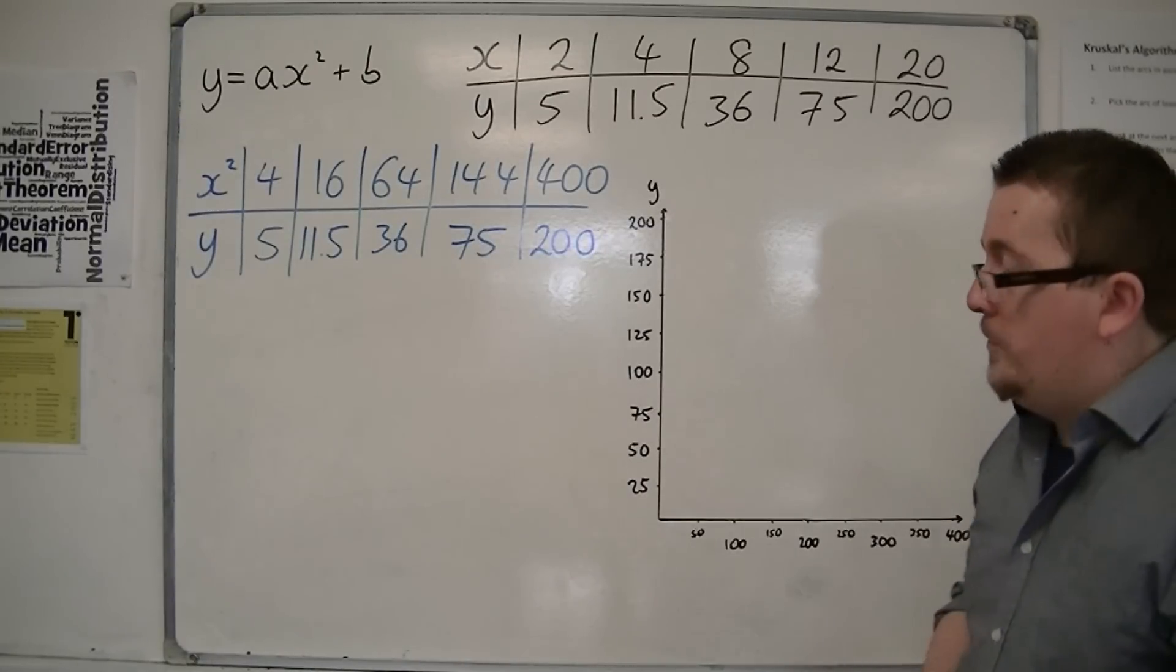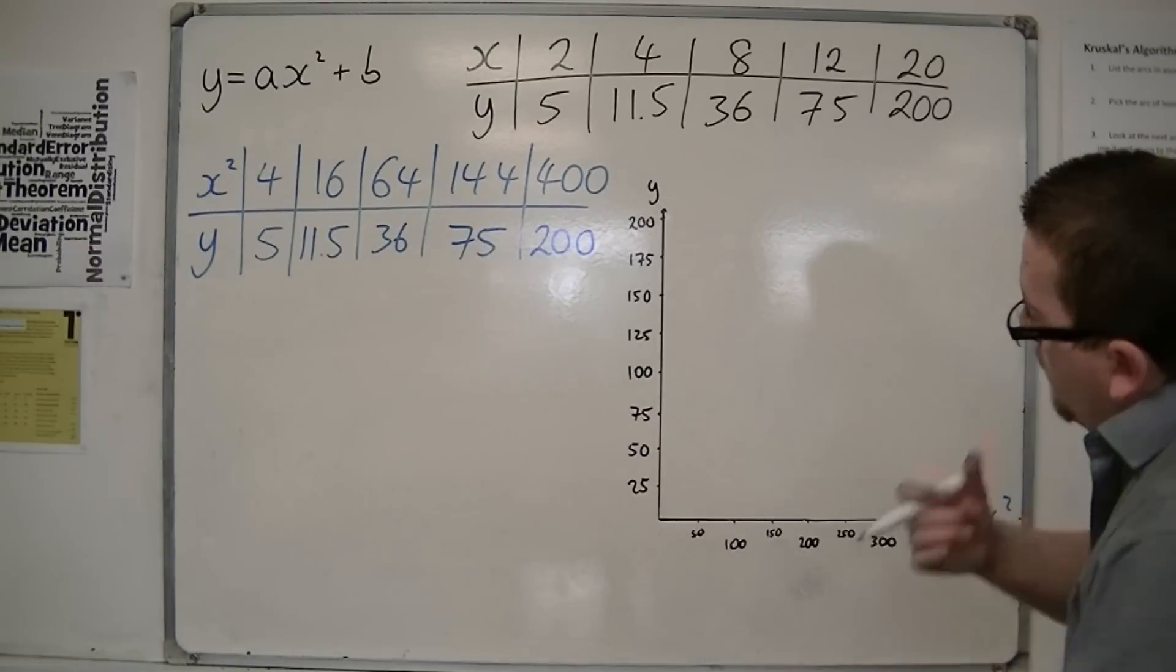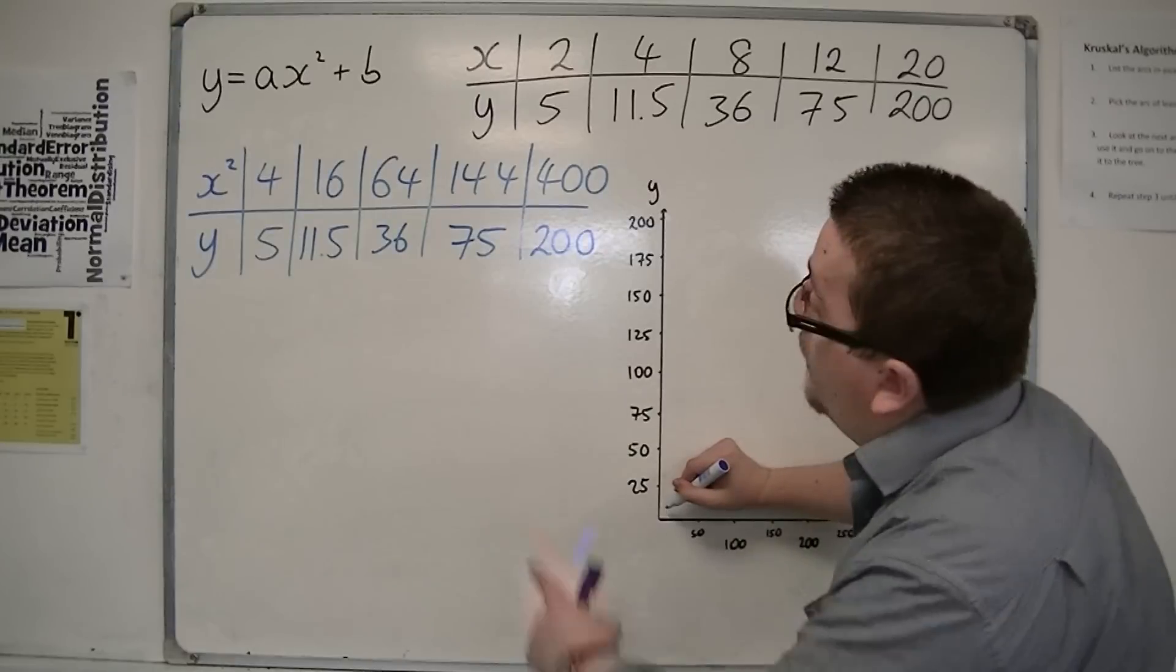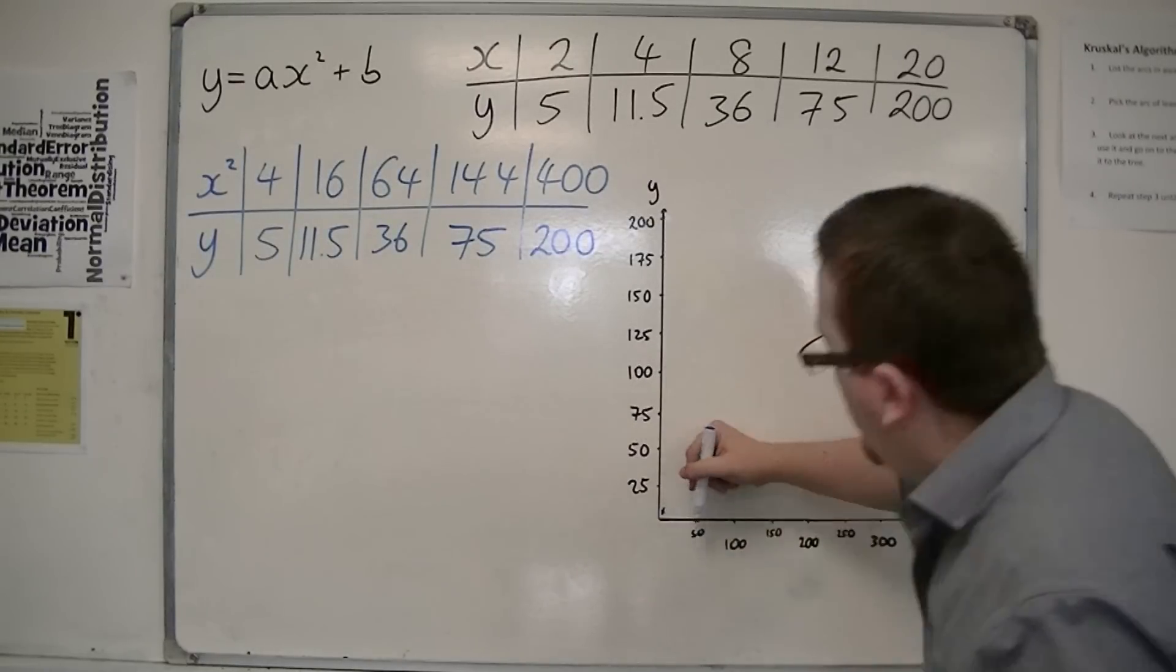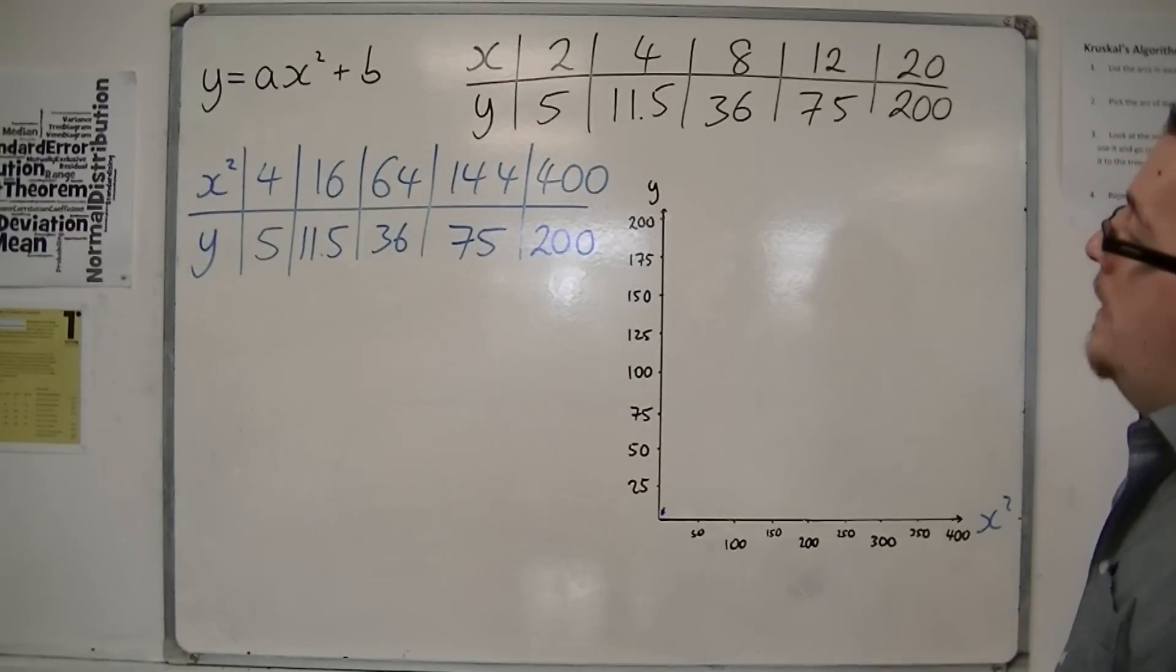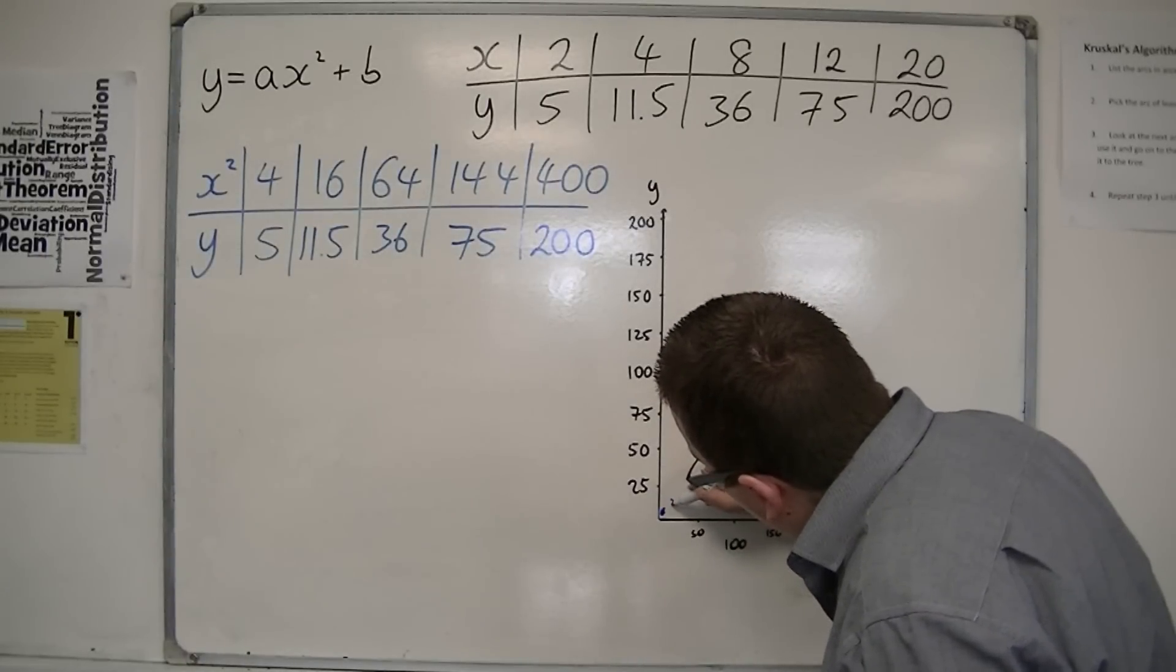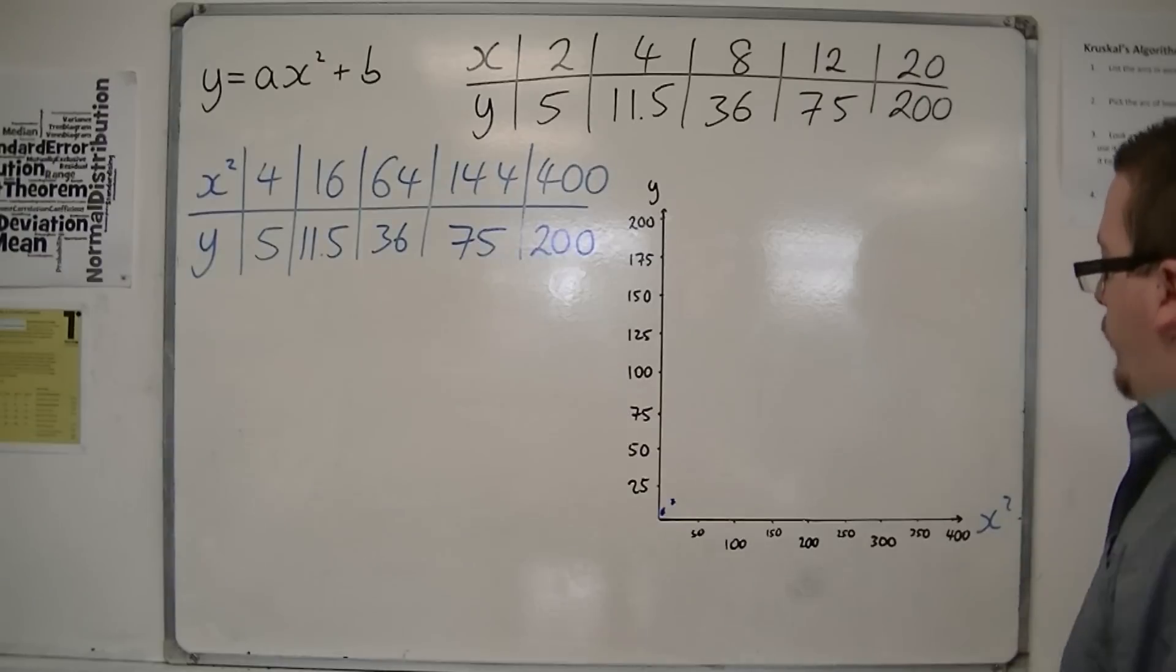So I'm going to do this very roughly, as you can see that I'm doing this without grid lines. So this is going to be quite tricky. So I'm going to have this first coordinate, 4, 5, it's going to be somewhere down here, quite close to 0, 0. Then we're going to have 16, 11.5. Once again, not very easy to do this. 64, 36...